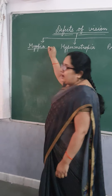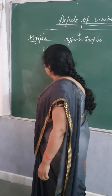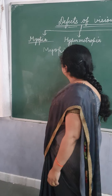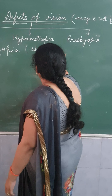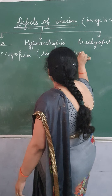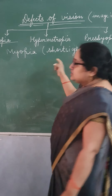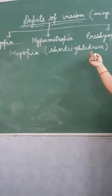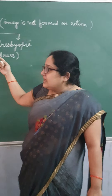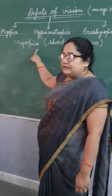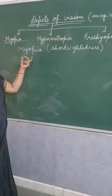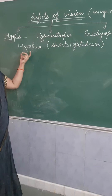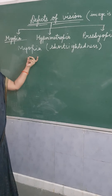Today we are going to discuss myopia, which is the first defect. Myopia is also known as short-sightedness or near-sightedness. In myopia, the person is not able to see far objects clearly. The person can see nearby objects clearly but cannot see far objects clearly.